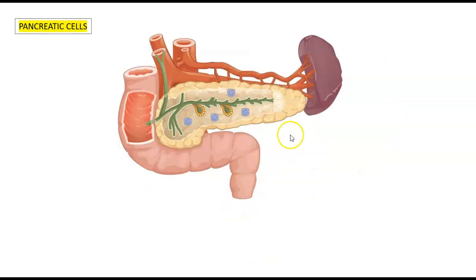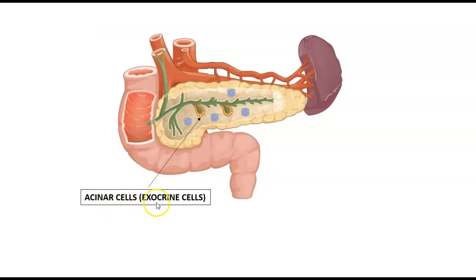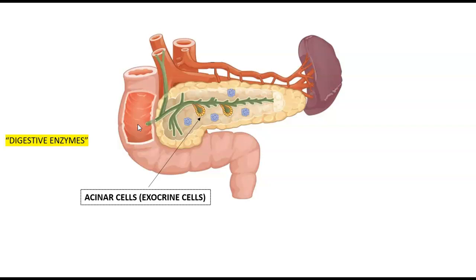Looking in more detail at the pancreatic duct, many cells come off the duct inferiorly and superiorly — these are called the acinar cells, making up the exocrine function of the pancreas. They deal primarily with digestive enzymes that get released from these cells into the pancreatic duct and eventually make their way into the duodenum.